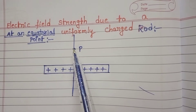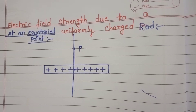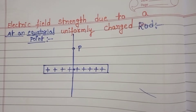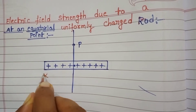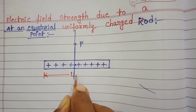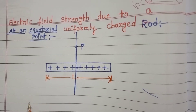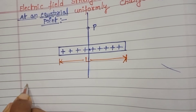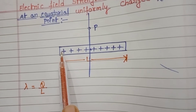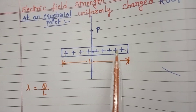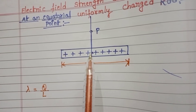We want to find out the intensity of electric field at a point P on the Equatorial Line of a Uniformly Charged Rod. Consider a rod of length L. Q amount of charge is distributed uniformly over the length of this rod. Charge per unit length lambda equals Q by L. This charge is distributed continuously. For continuous charge distribution, Coulomb's law is not applicable — it is applicable only for point charges.